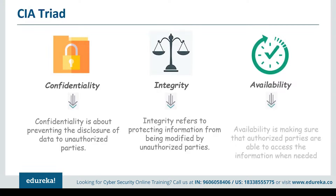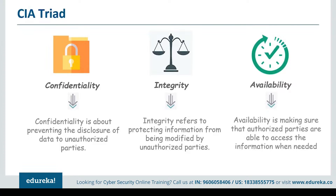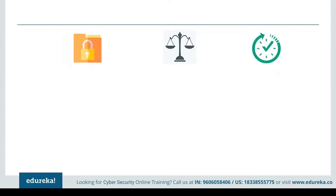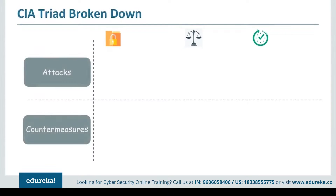The final component of the CIA triad is availability — the assurance that systems and data are accessible by authorized users whenever they need it. If we cannot access the data whenever we need it, we are definitely not secure. Now we know what the CIA triad basically means.